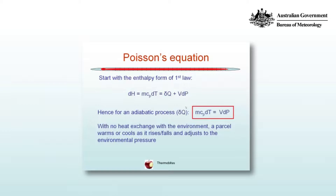Let's start with the enthalpy form of the first law, where dh is equal to m cp dt, which is equal to del Q plus vdp. Because it's an adiabatic process, del Q is equal to zero, so m cp dt is equal to vdp. What this means is that given the parcel does not exchange heat with its environment, it warms or cools as it rises or falls and adjusts to the environmental pressure.